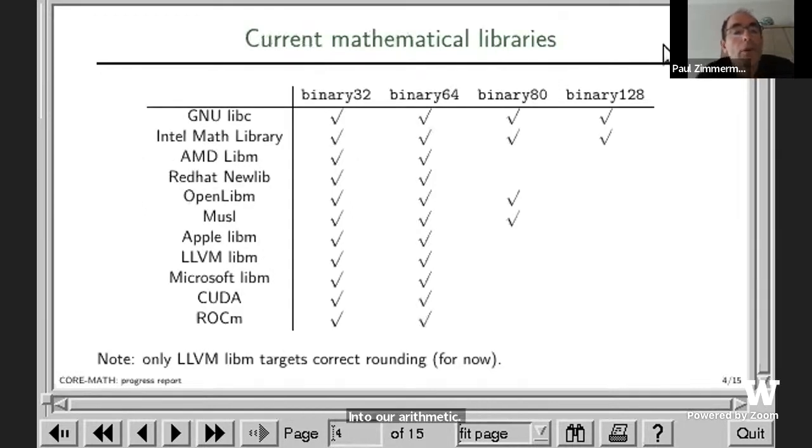If you look at the current mathematical libraries, there are many of them. In fact, there are a total of 11 libraries I know: nine that work on CPU mainly and two mainly on GPU. They all provide at least single and double precision, and some of them provide also extended double, which I call binary80 because it's an 80-bit format, and also quad precision. Among all those libraries, only LLVM targets correct rounding for now, so the goal is to push more and more of those libraries to also provide correct rounding.